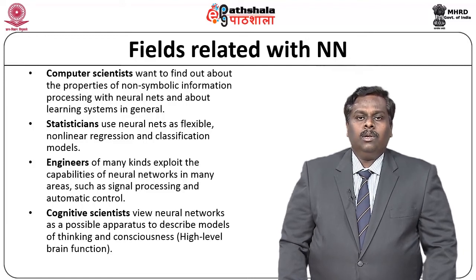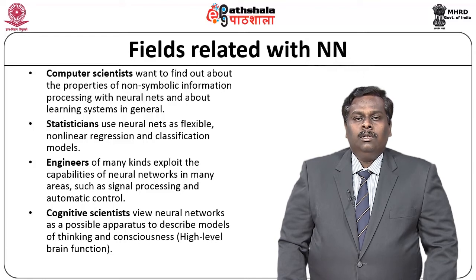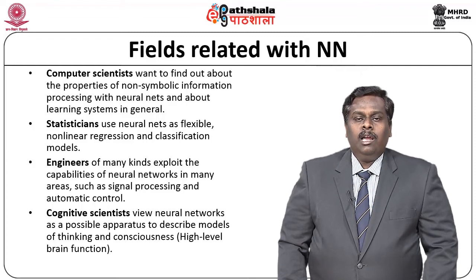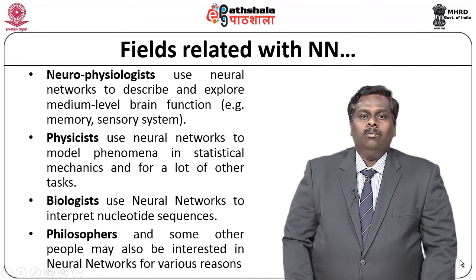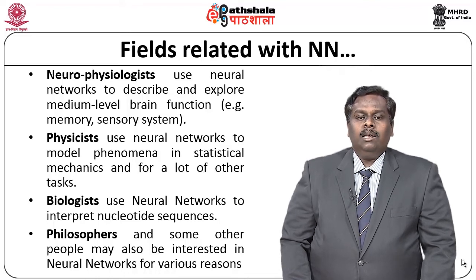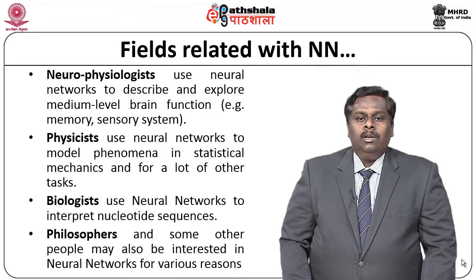Engineers in general exploit neural networks for research areas like signal processing and automatic controls. In signal processing and automatic control environments, input data is often not clearly defined and is erroneous in nature — so when handling erroneous data, neural networks come first. Cognitive scientists use neural networks to create models of thinking and consciousness. Neuropsychologists, physicists, biologists, and philosophers also use neural networks for defining brain functions, understanding how materials behave, interact, and for identifying nuclear sequences.